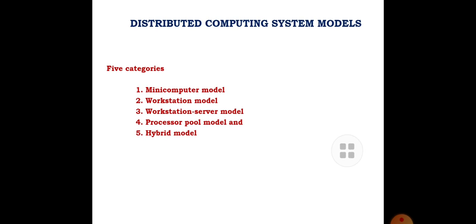What is a Distributed Computing System? Distributed Computing is a model in which components of the software systems are shared among multiple computers. Even though the components are spread out across multiple computers, they are run as one system.